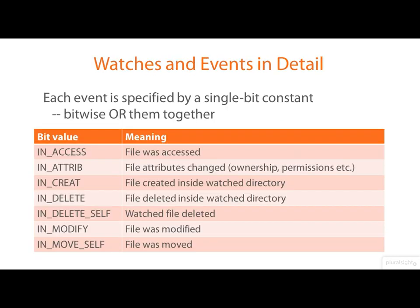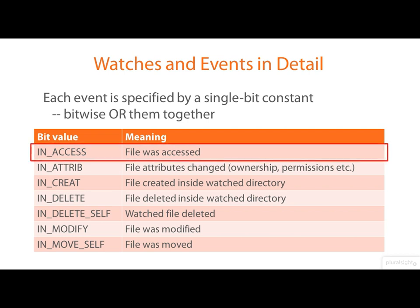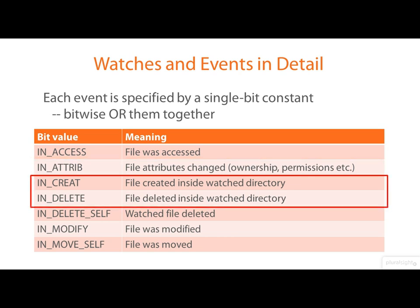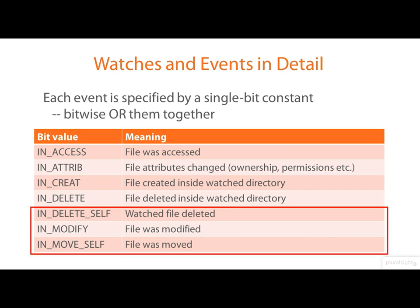Each event that you can watch for is specified as a single bit in the mask, and the intention is that you OR them together to get the event combination that you want. Each of them has a symbolic constant. IN_ACCESS, for example, is the event that means the file was accessed. Another means that a file's ownership or permissions were changed. Two constants are relevant if we're watching a directory — they indicate that a file was created or deleted within the watched directory. Other events refer to the watched file itself, to say that it was deleted, modified, or moved. This is nowhere near a complete list; I encourage you to read the man page for iNotify for the full story.